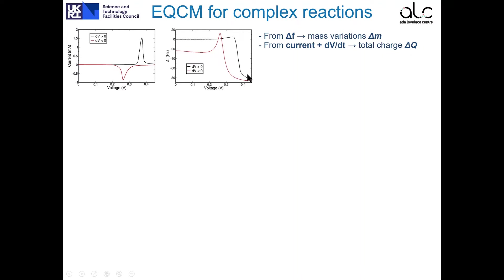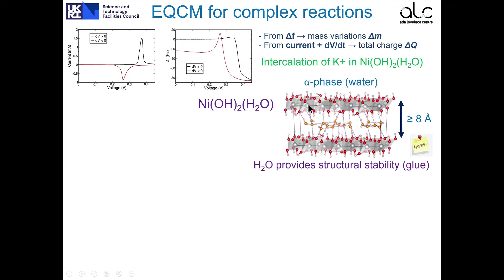These results here correspond to the intercalation of potassium in nickel-oxy-hydroxide-hydrated, which is the example I will use in this talk. This material, nickel-oxy-hydroxide-hydrated, is schematically shown in this picture. We have layers of nickel, oxygen and hydrogen separated by distances larger than 8 Angstroms. The intercalated water here in orange is very important for this material because it provides structural stability. You can think the water behaves as a glue. These yellow tags will be used throughout the talk to emphasize results and statements that I would like the audience to remember.